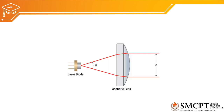The third property of laser is collimation. Collimation means all the waves of the laser are parallel to each other. The monochromatic waves released from the laser device are made to travel parallel with the help of a lens.